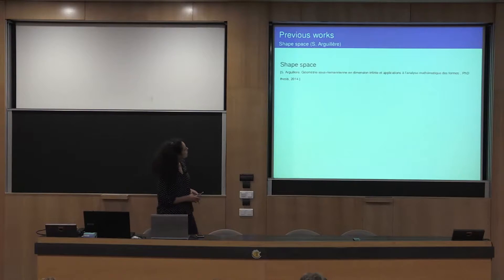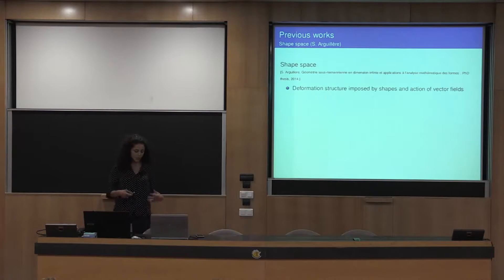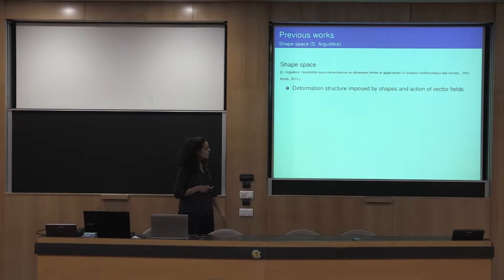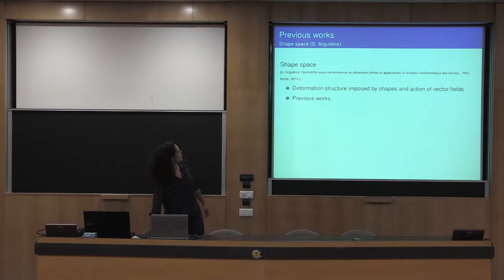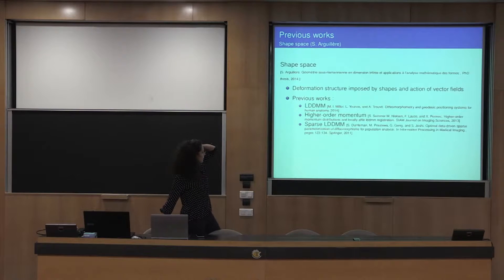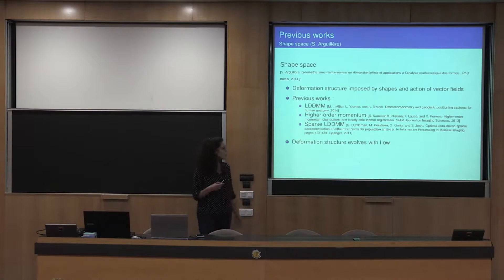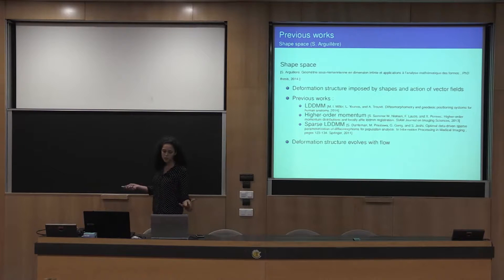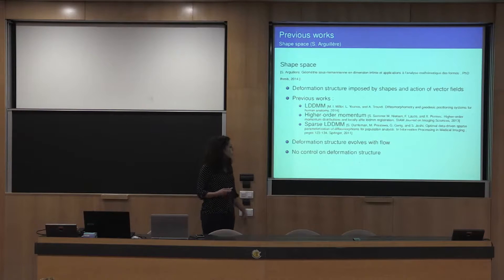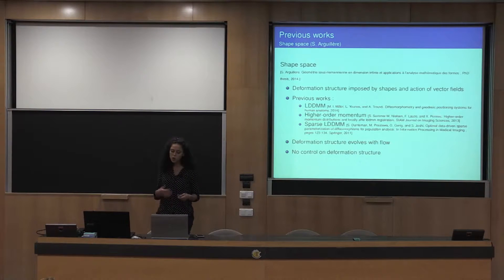On the opposite, in the framework of shape space, the deformation structure — the type of vector field that is used — is imposed by the type of shapes and the type of infinitesimal actions of vector fields on these shapes. This framework embraces different previous works such as LDDMM, higher-order momentum, and sparse LDDMM. In these frameworks, the deformation structure evolves with the flow, but there is no possibility to locally control the type of vector field that is acting, so there is no control on the deformation module or the deformation structure.